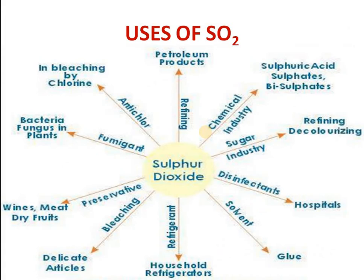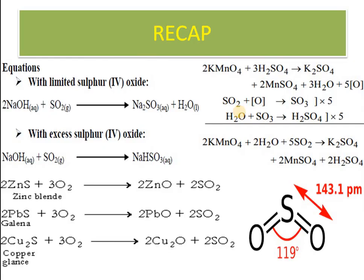Uses of sulfur dioxide: it is used in refining petroleum products, in chemical industries to form bisulfites and sulfites, in the sugar industry as a decolorizing agent, as a disinfectant in hospitals, as a solvent for glue making, and as a refrigerant. It has bleaching properties due to its reducing action. It is also used as a preservative in making wine, meat, and dry foods, and as a fumigant to kill bacteria and fungi. It also acts as an anti-chlor agent after bleaching with chlorine.